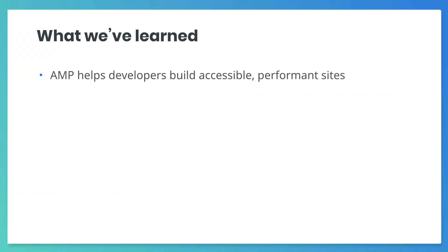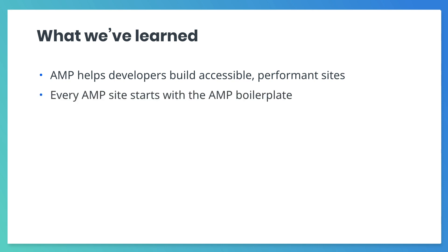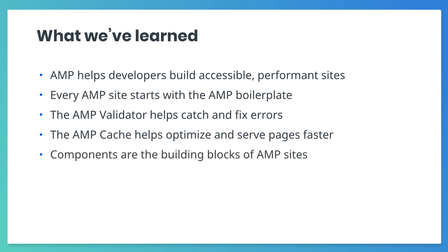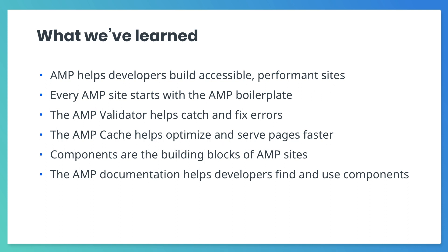We've learned that AMP was created to help web developers build accessible, performant sites. Every AMP site starts with an AMP boilerplate. The AMP validator catches and helps fix errors. The AMP cache helps optimize and serve pages faster. Components are the building blocks of AMP sites, and the documentation helps developers find and use components.